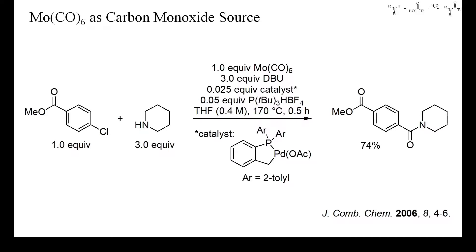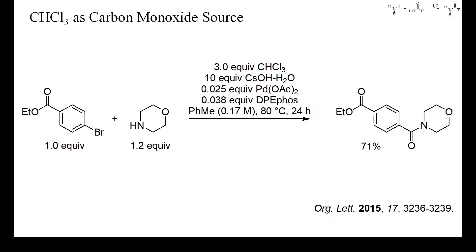Again, with the aid of a palladium phosphine catalyst, a rather unreactive aryl chloride was converted into an amide. Still easier to handle is chloroform, which can also serve as a carbon monoxide source when treated with alkali hydroxides. Only three equivalents of chloroform were sufficient to carbonylate an aryl bromide in 71% yield. No extensive saponification of the ester occurred, probably because of the poor solubility of caesium hydroxide in toluene.